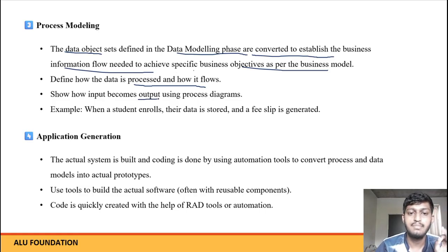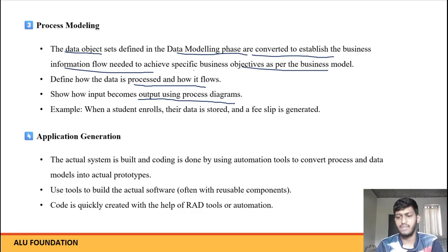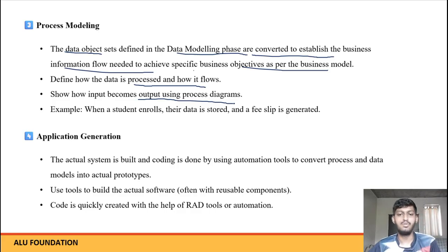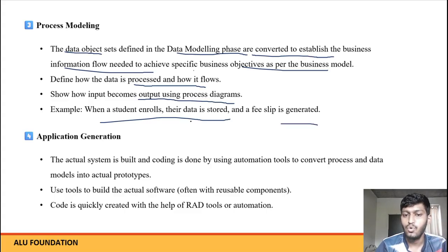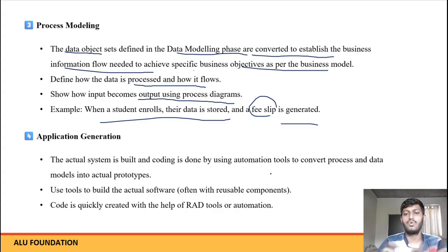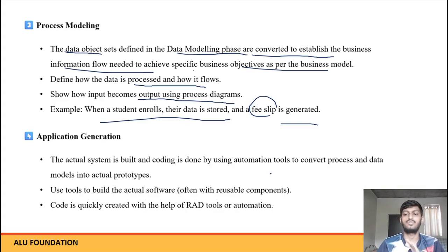Define how data is processed and how it flows — yeh process model mein define karte hain. So how input becomes output using the process diagrams — kaisa input ek output mein convert hota hai, process kya hota hai. Jo input milega, ek process hoga, aur ek output generate hoga. Example: when a student enrolls, the data is stored and a fee slip is generated. So this is the process — enroll karne ke baad data store hoga, aur a fee slip generated hoga. So this is your process — process aapko define karna padta hai in process modeling.